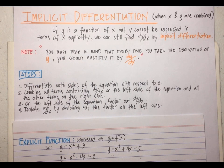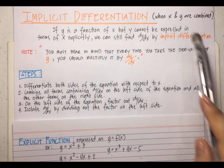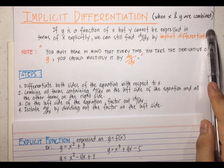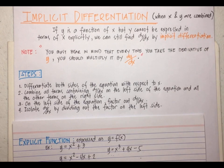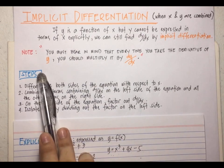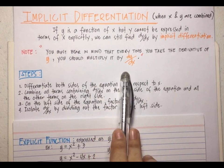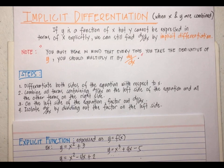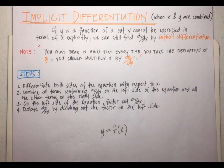The most important thing to know about implicit differentiation is that we use it when x and y are combined. We take the derivative of every term using rules like power, product, and so forth. But bear in mind that every time you take the derivative of y, you should multiply it by dy/dx. Let's have some examples.